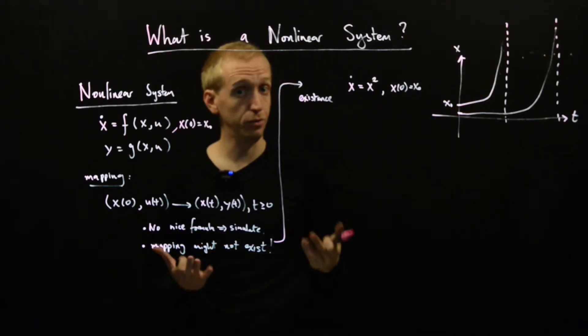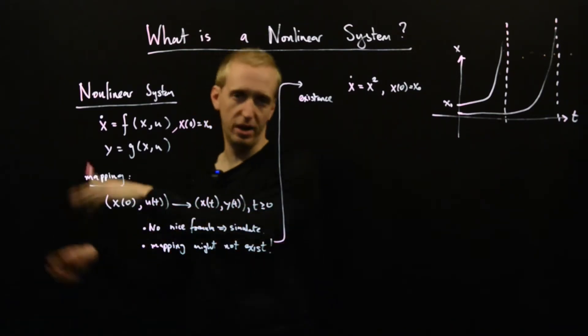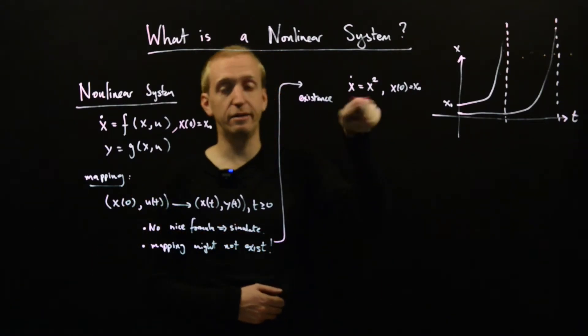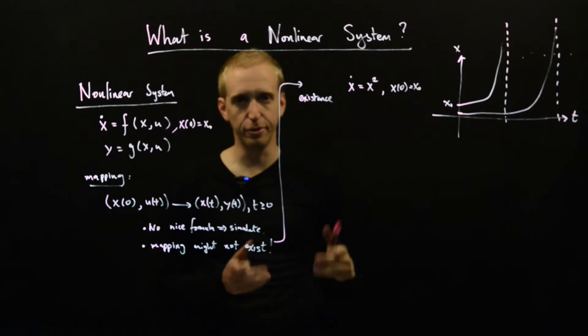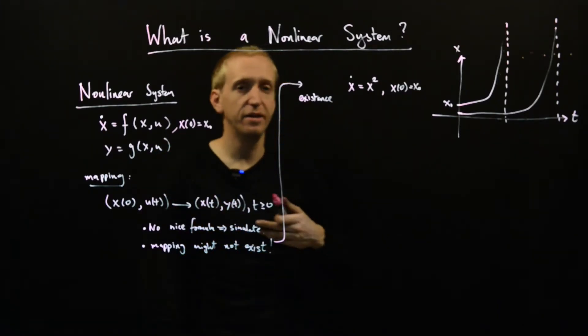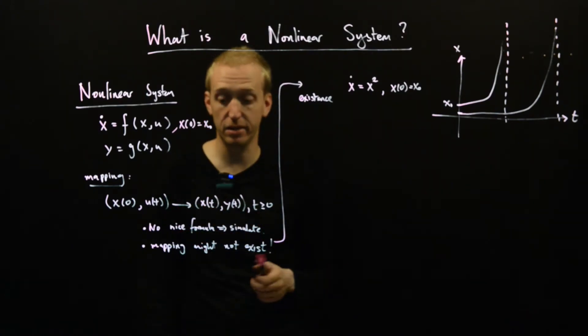And this is in contrast with linear systems. Linear systems, you've got a formula and that formula held for all times in the future and it gave you something very predictable and very reliable. But here, if you have particularly bad differential equations, you're not guaranteed to get a mapping that exists for all times or even any times.